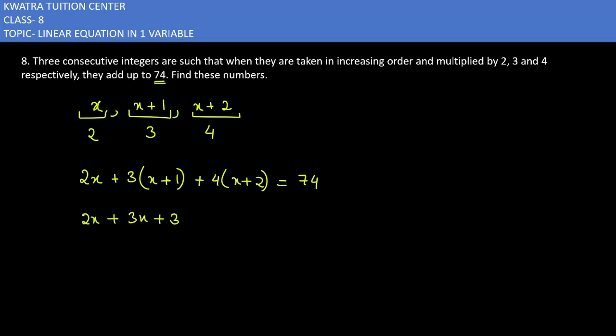When we multiply 4 times (x plus 2), we get 4x plus 8. So the equation becomes 2x plus 3x plus 3 plus 4x plus 8 equals 74.